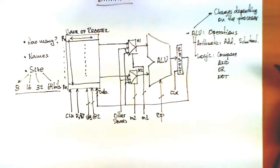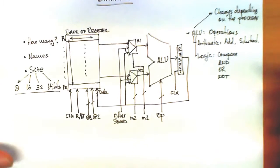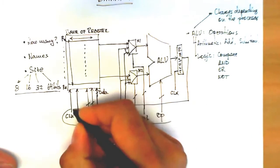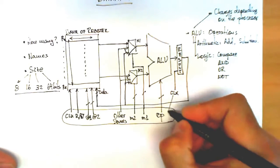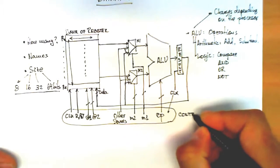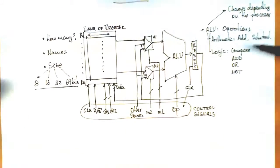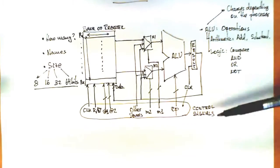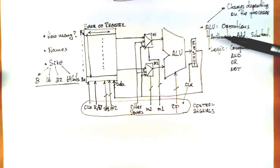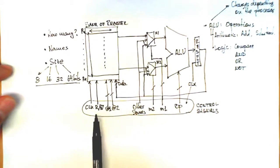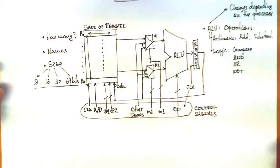This is our initial, simplified data path, which can do a lot of interesting things. Looking more closely, all the signals present here — including the clock — are what we call control signals. Another way of looking at this data path is as a digital circuit capable of carrying out several operations, where the type of operation and how results are stored depend on the values these control signals take over time.